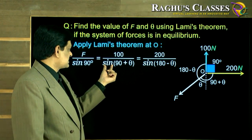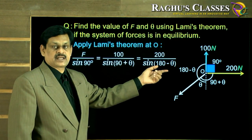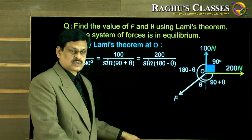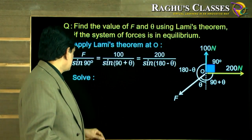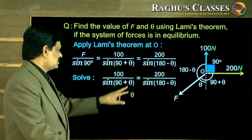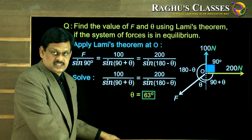So you can easily simplify. Sine of 90 plus theta, you know, is cosine theta. And here sine of 180 minus theta is also sine theta. So you can rearrange this. These two can be solved, this and this. And once you solve that yourself, you get the theta value to be 63 degrees.